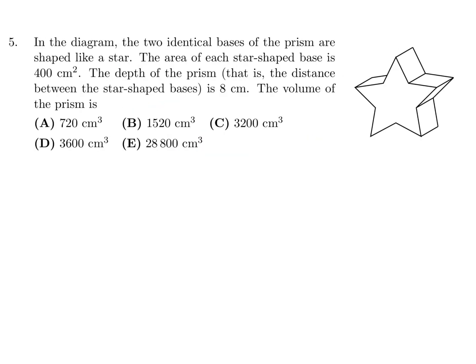In the diagram, two identical bases of the prism are shaped like a star. The area of each star-shaped base is 400 centimeters squared. The depth of the prism is 8. So the volume is just going to be the area of the base times the height, or the depth. So the area of the base is 400, the height is 8, so that's 3,200. And that is choice C.